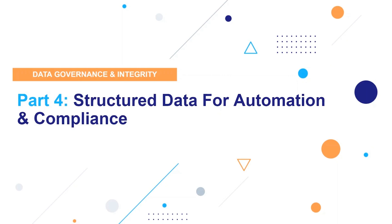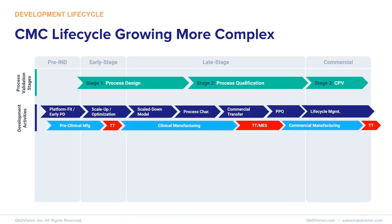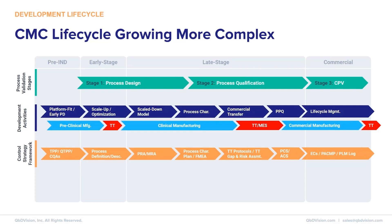Now let's think about the application of these concepts and how they come together to support master data and knowledge management with the requisite attention to data integrity. Taking a step back, let's revisit the CMC lifecycle, which is growing more complex with the various gene and cell therapeutic modalities in development. The guiding approach for product development is outlined in the three stages of process validation: going from design to qualification to CPV. Sponsors and contract manufacturers undertake a series of development activities as they move through these stages, primarily process development to scale-up and optimization to characterization and so on.